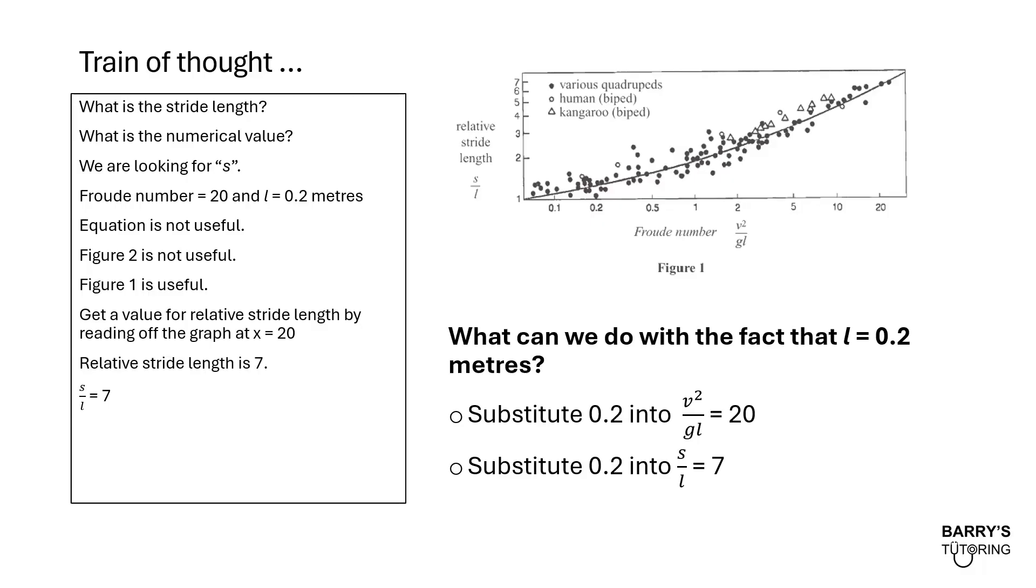What can we do with the fact that L is equal to 0.2 meters? Should we substitute that number into V squared over GL equals to 20, or should we substitute it into S over L equals to 7? I've got a feeling you guys already know the answer, so it shouldn't take too long. Let's substitute it into S over L equals to 7. Again, it's got to do with what the question's asking. We determined earlier on, we're looking for S. That's probably the best way forward.